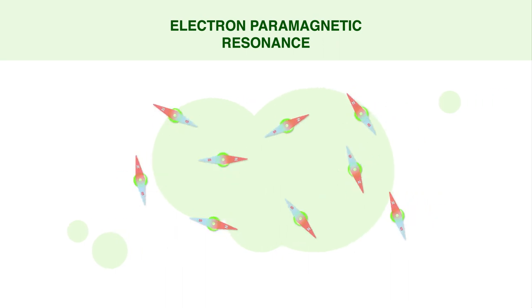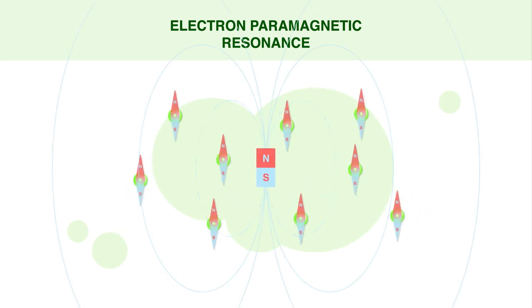When placed in a strong magnetic field, molecules containing unpaired electrons behave as little magnets and line up as compass needles.